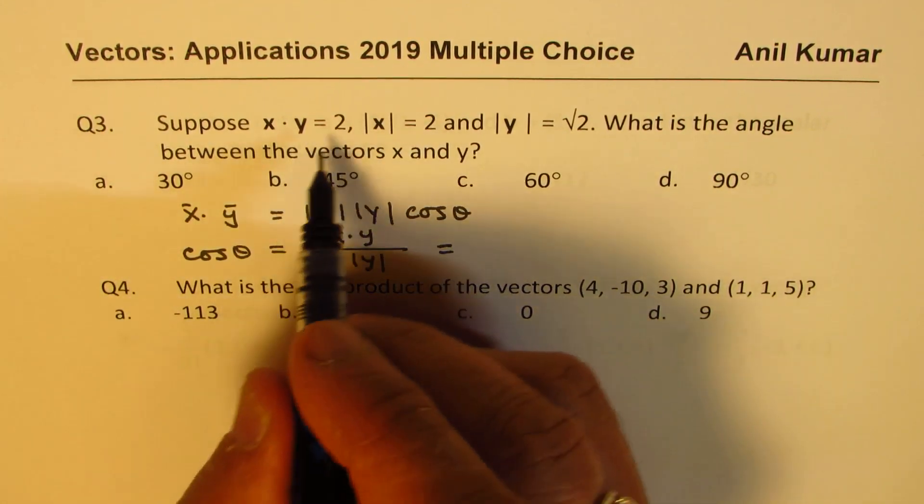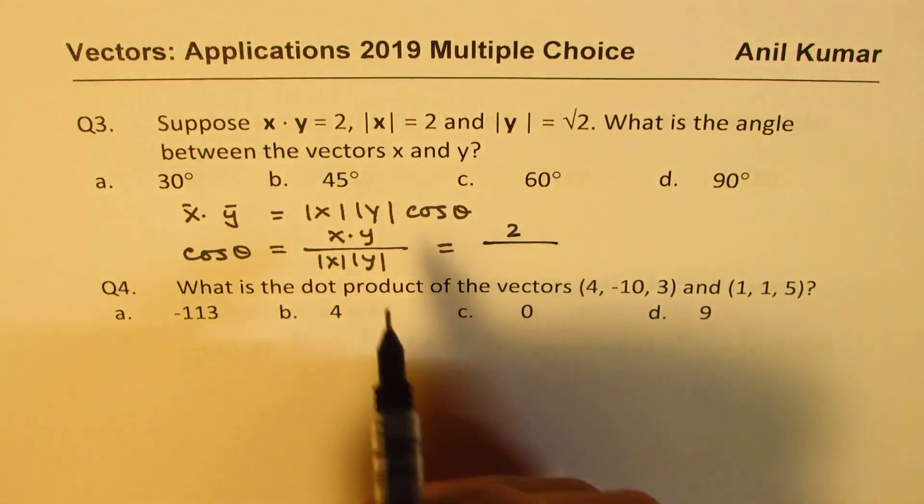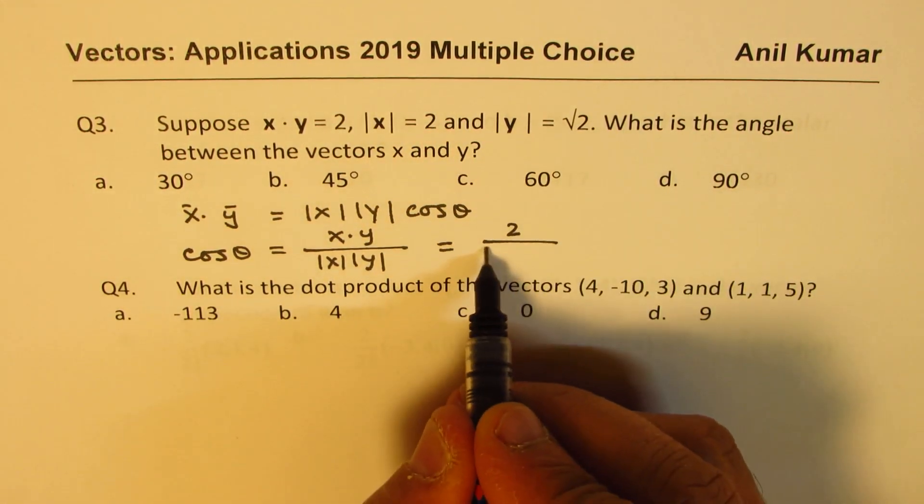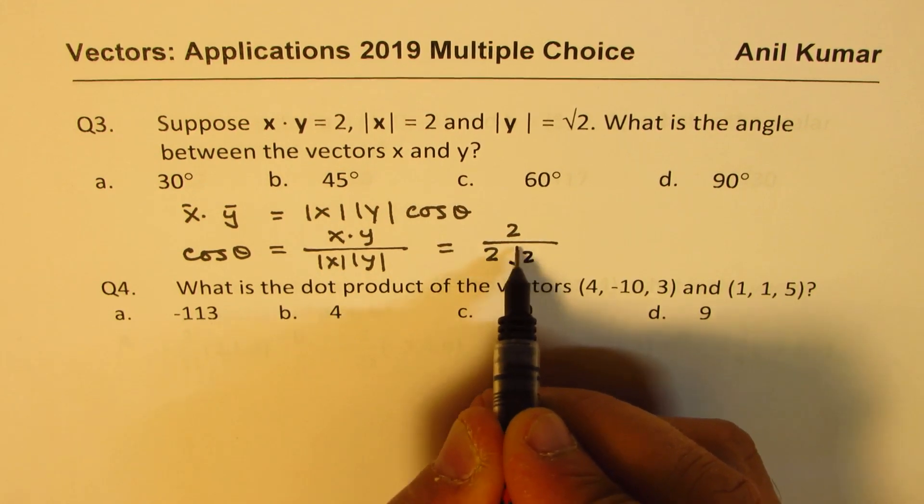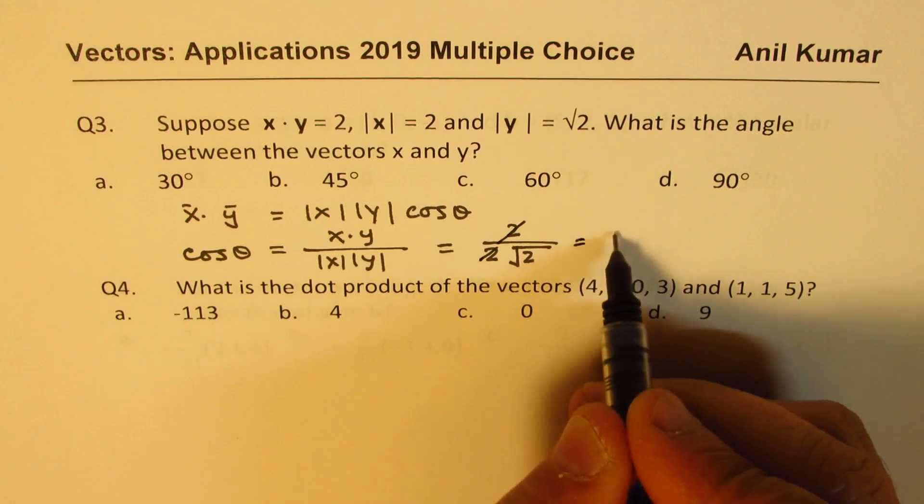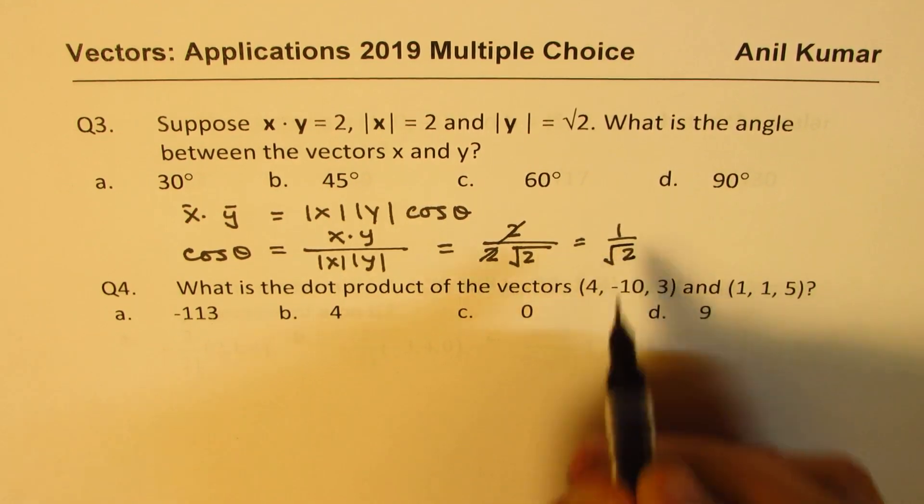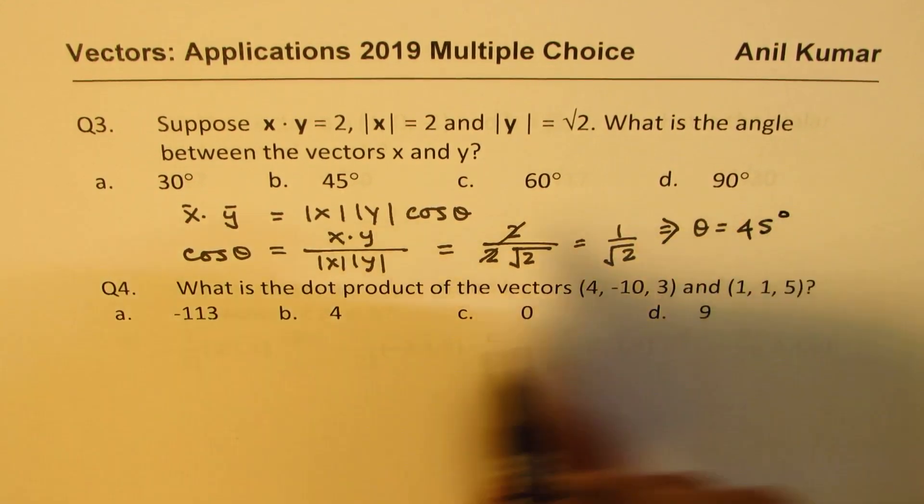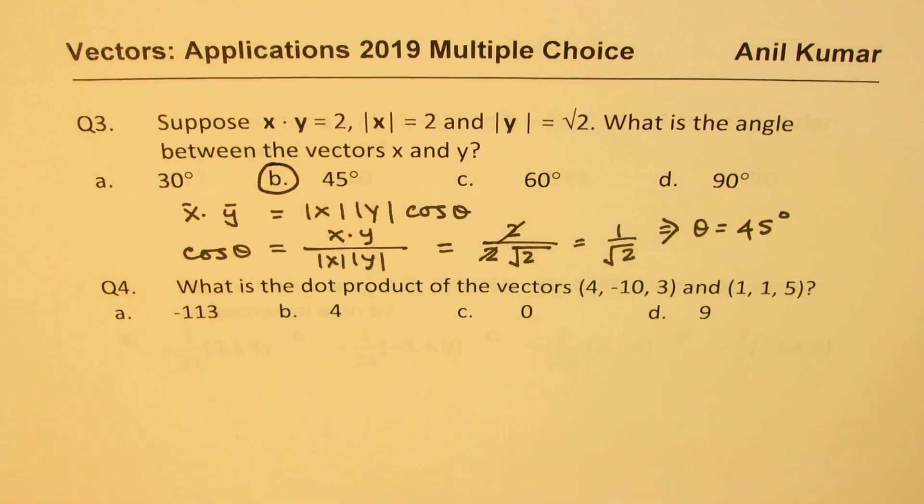So let us calculate. So we have the value as 2 for the dot product, and these magnitudes are given to us as 2 and square root of 2. So what we get cos theta equals 1 over square root 2. So that implies that theta equals 45 degrees. So B is the right option.